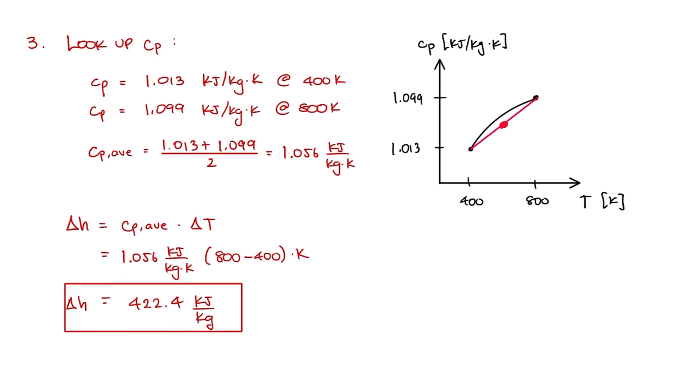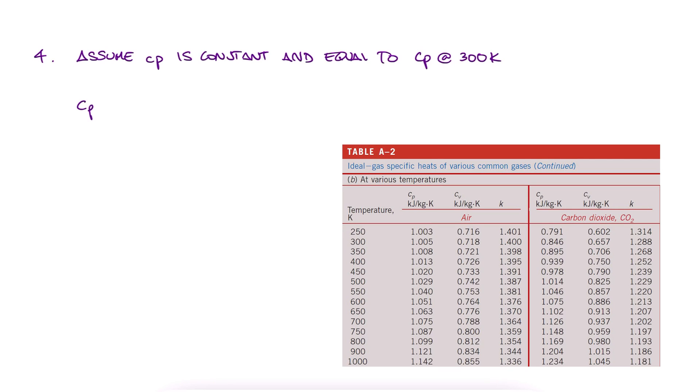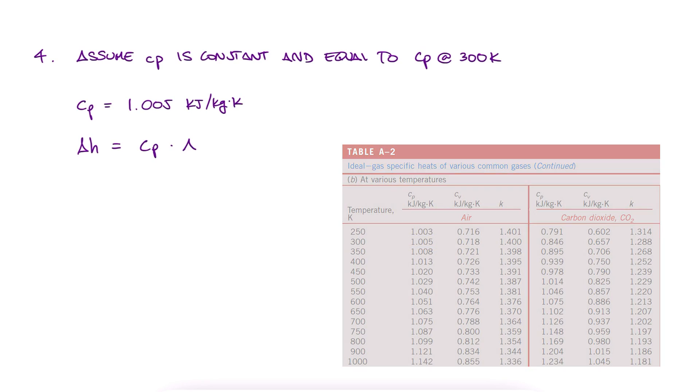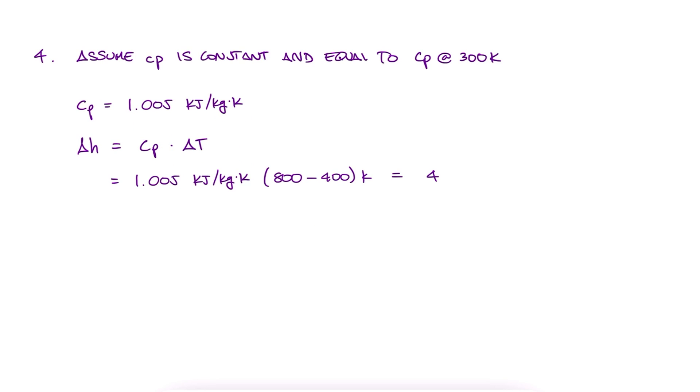And finally, the last and least accurate option we have is to assume that Cp is constant and that it is equal to that at 400K, what is known as cold properties. Using the value for Cp at 300K, we multiply it by the change in temperature and obtain 402 kJ per kilogram.